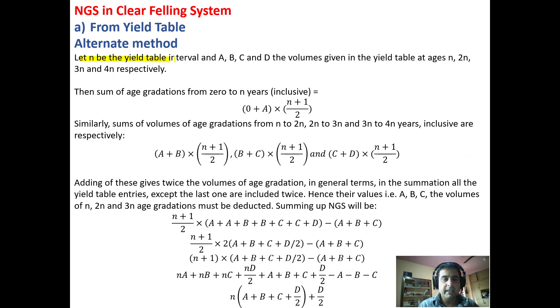Let N be the yield table interval and A, B, C, D be the volumes at the ages N, 2N, 3N and 4N respectively. A is the volume at age N, B is the volume at age 2N, C is the volume at age 3N and D is the volume at age 4N.